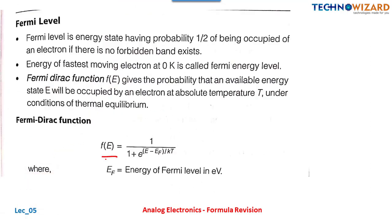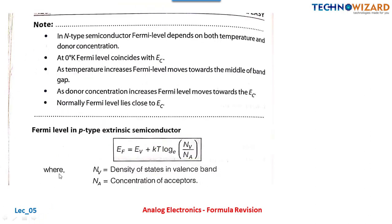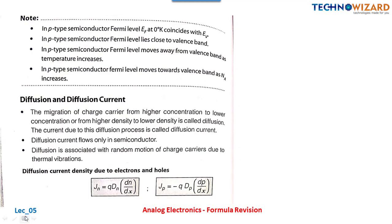Fermi level: the Fermi function is f(E) = 1 / (1 + e^((E−EF)/kT)). The Fermi level is the energy state having a probability of 1/2 of being occupied by an electron. For intrinsic semiconductors, there is a specific Fermi level position; for N-type it shifts toward the conduction band; for P-type it shifts toward the valence band. This is not very important for most exams.